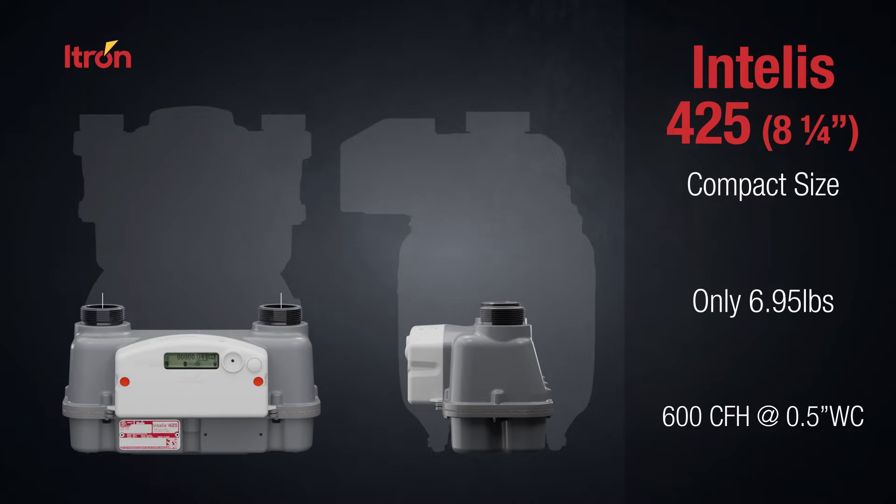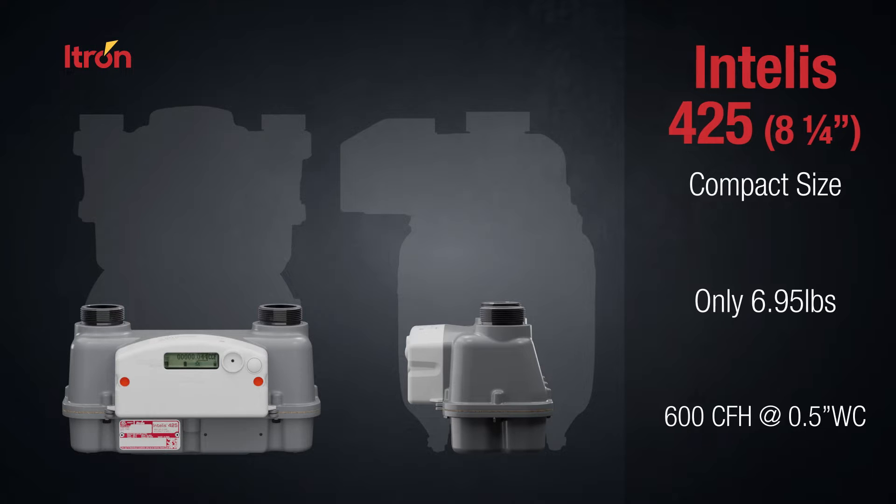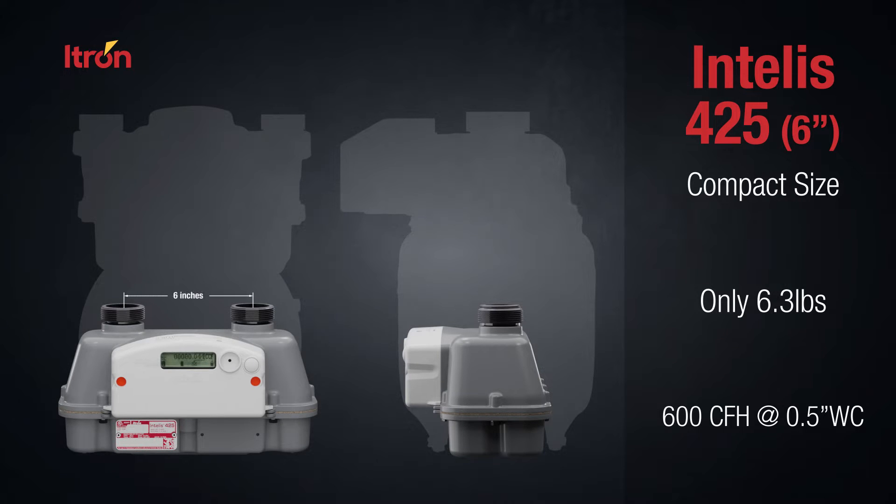The INTELIS 425 gas meter is a compact ANSI 500 class meter with an impressive capacity of 600 cubic feet per hour at a half-inch water column, available with both an 8 and a quarter and 6 inch hub center to center distance for easy field retrofits.